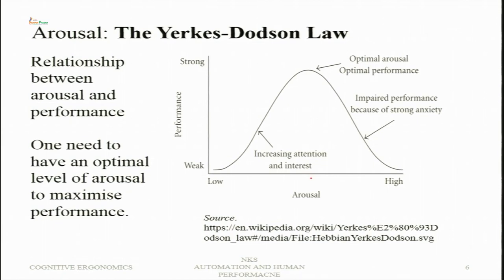As the day passes, arousal increases quickly and we reach a certain level where arousal becomes maximum — there we can give the best performance. But if arousal goes beyond the optimal level, there is a decline in performance. There is a level at which performance will be strongest — the optimal level of arousal — and beyond that there will be impaired performance because of strong anxiety. Generally, a high level of arousal leads to anxiety, and if anxiety becomes too strong, performance becomes very low.